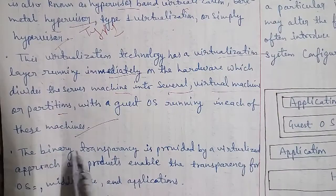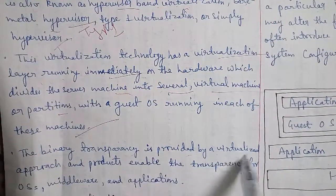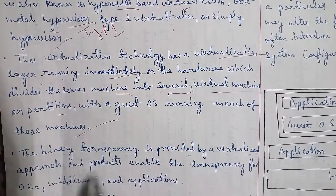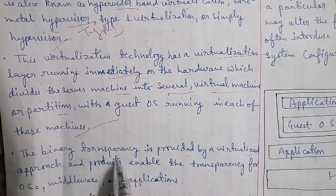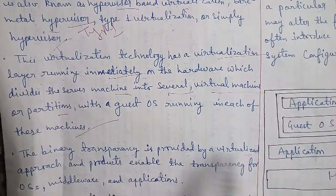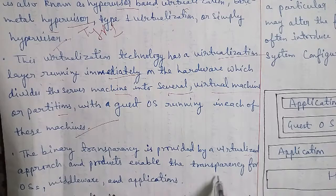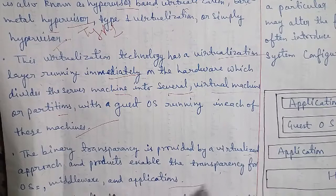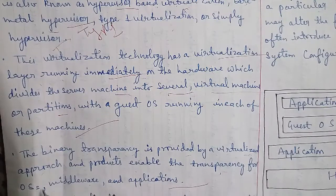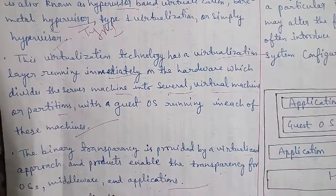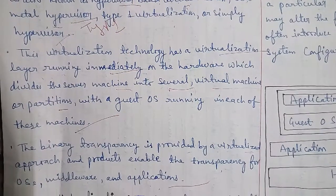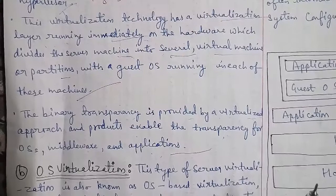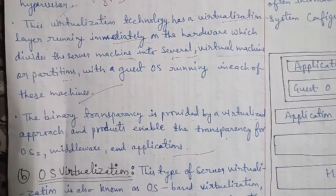The next point is that binary transparency is provided by the virtualized approach, which enables product transparency for the OS, middleware, and applications. So basically, transparency is provided for operating systems, middleware, and for applications.